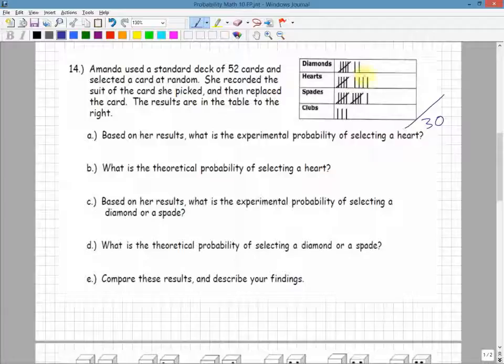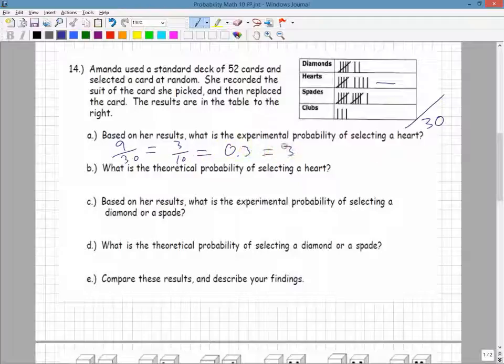Based on her results, so the experiment, what is the experimental probability of selecting a heart? Here are the hearts. I can see that there's 9 of them. 5 plus 4 is 9 out of a total of 30. You could reduce the fraction. If you want to reduce the fraction, divide by 3, you get 3 out of 10, which is totally fine, or 0.3, or 30%.